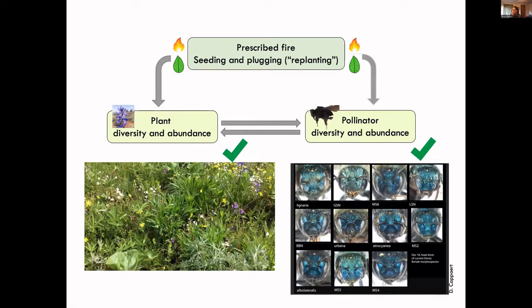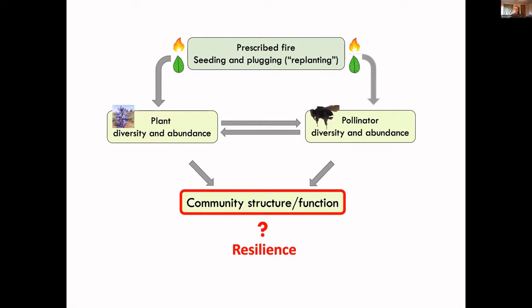We have evidence that both of these things are in fact happening — a diverse set of forbs and pollinator diversity. We know these restoration actions are changing plant composition and pollinator composition. But that's not all: you also get an emergent effect, which is a change in community structure — the way players are interacting with each other — and the consequent community function.